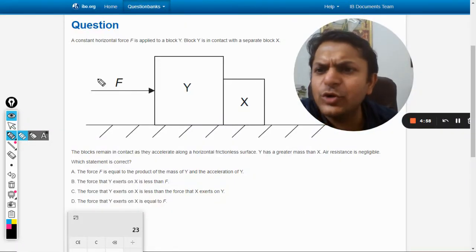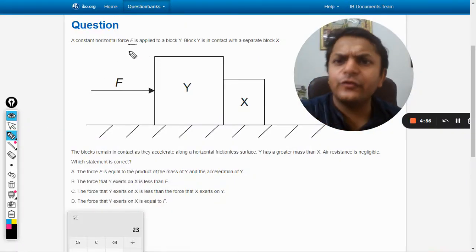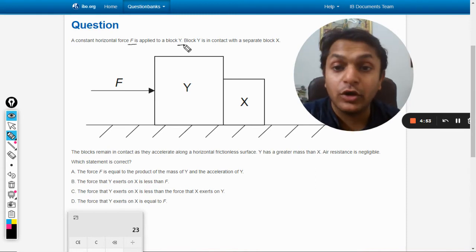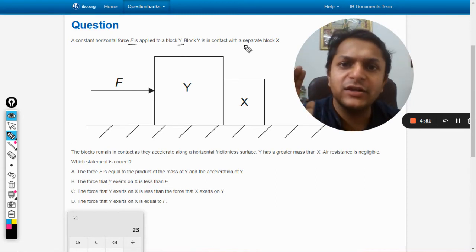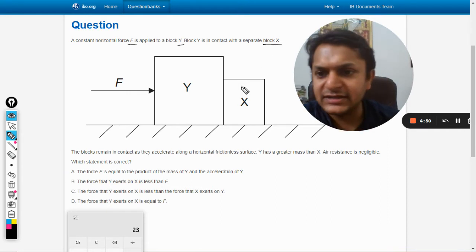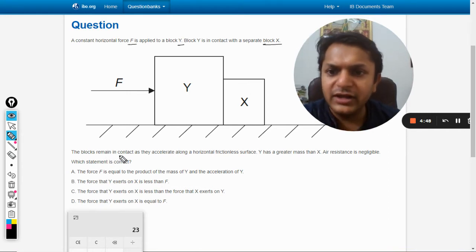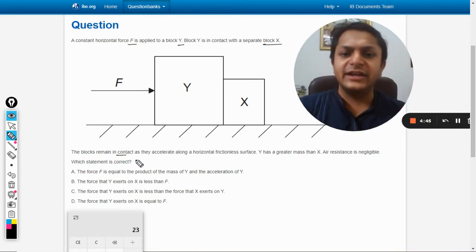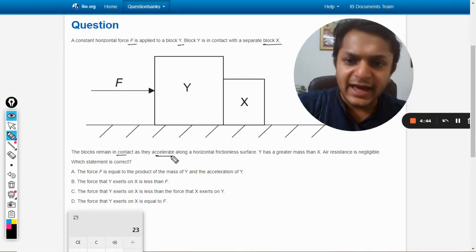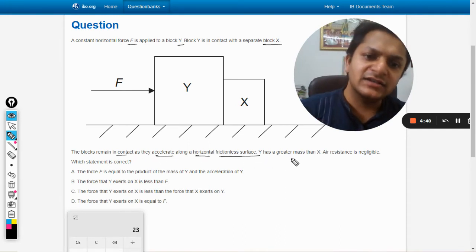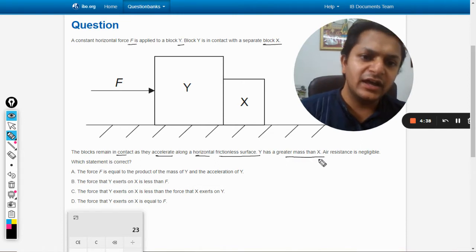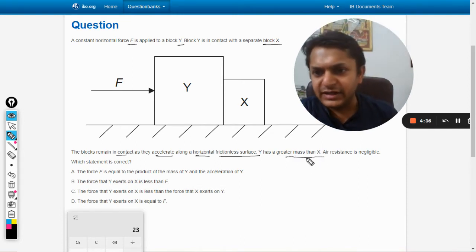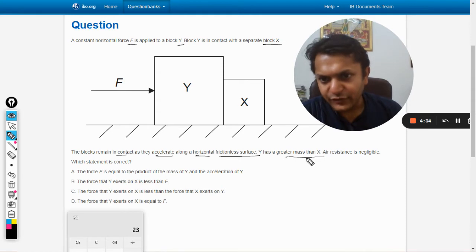Okay, so in this question a constant horizontal force F is applied to block Y. Block Y is in contact with a separate block X. The blocks remain in contact as they accelerate along the horizontal frictionless surface. Y has a greater mass than X, air resistance is negligible.